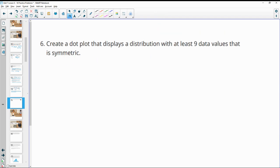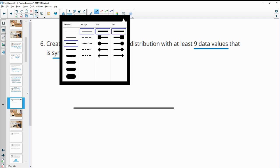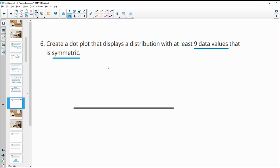Number six, create a dot plot that displays a distribution with at least nine data points. So we need nine data values, and it needs to be symmetric, okay, meaning the same on either side. So your answers are going to vary for this, so you can do what you want. Just have to have nine data points, like it says, and it has to be symmetric.